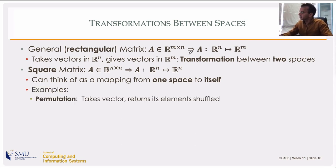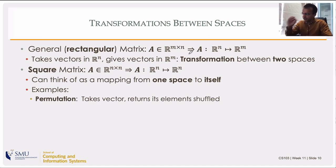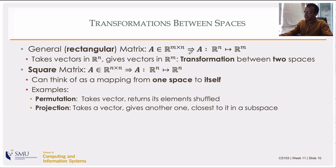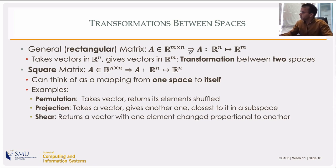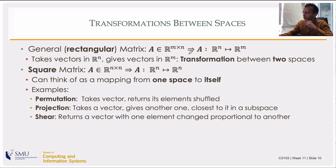Some examples: permutation takes a vector, shuffles the elements, and gives it back. The projection operator also takes a vector in R^n and gives another vector in R^n — actually a member of a subspace. For a three-dimensional vector projected onto the XY plane, you get a vector with three components where the last component is zero. Then there's shearing — it returns a vector with one element changed proportional to another. It takes something like a unit square and gives you a parallelogram, a squashed version.